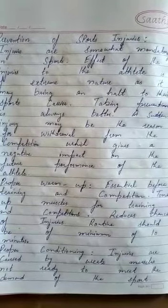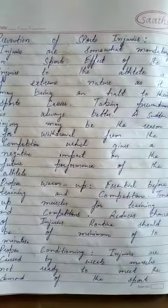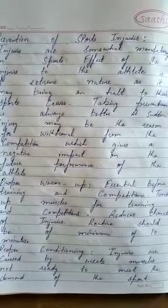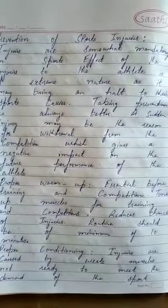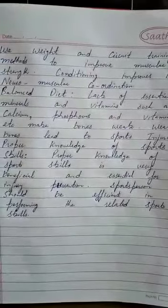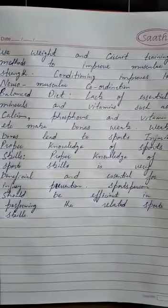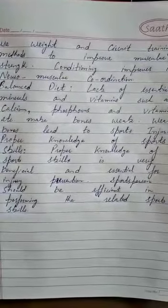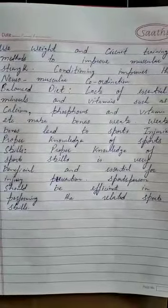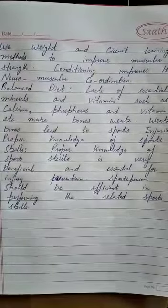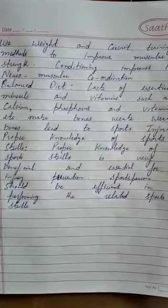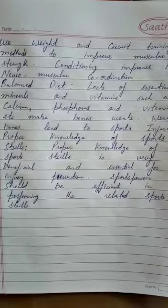Proper conditioning is also very beneficial in order to prevent sports injuries. Injuries are caused by weak muscles not ready to meet the demands of the sport. Use rate and circuit training methods to improve muscular strength. Conditioning also improves neuromuscular coordination.